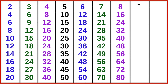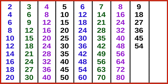9 ones are 9, 9 twos are 18, 9 threes are 27, 9 fours are 36, 9 fives are 45, 9 sixes are 54, 9 sevens are 63, 9 eights are 72, 9 nines are 81, 9 tens are 90.